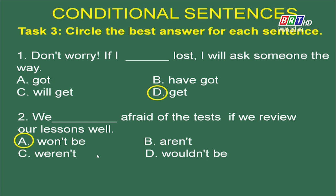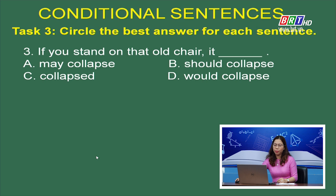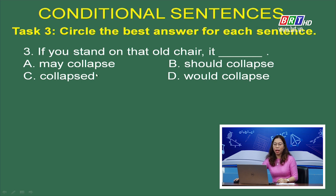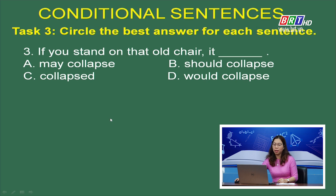Sentence 3: If you stand on that old chair, it (___). A. May collapse; B. Should collapse; C. Collapsed; D. Would collapse. Mệnh đề if đang chia ở thì hiện tại đơn — đây là câu điều kiện loại 1. Mệnh đề chính dùng thì tương lai đơn hoặc động từ khiếm khuyết — lựa chọn C và D không phù hợp. Xét về nghĩa: nếu bạn đứng trên chiếc ghế cũ đó, nó có lẽ sụp (may collapse) — hay là nó nên sụp (should collapse)? Dĩ nhiên là lựa chọn A. Correct.